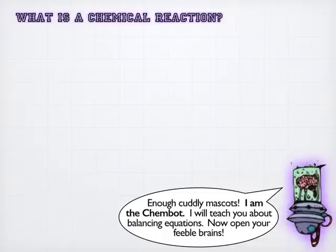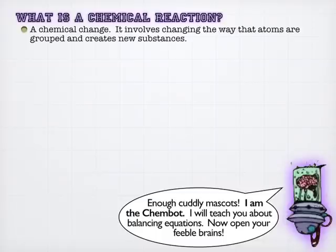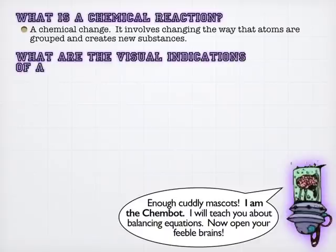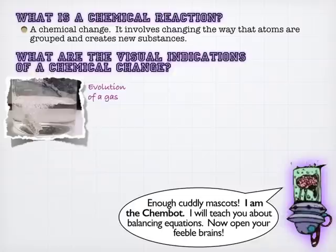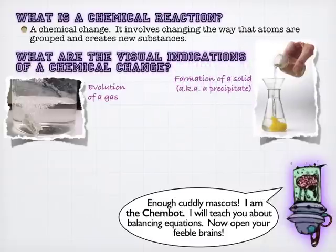So remember that a chemical reaction is really just a chemical change, and that's the idea of rearranging atoms to make new substances. There are certainly visual indications of chemical reactions going on, the idea of evolution of a gas. So for instance, if you put baking soda in vinegar, you see a gas coming off there, or calcium in water, you'll see hydrogen gas coming off. The evolution of a gas is a good sign that there's chemical changes going on, because you're liberating a gas.